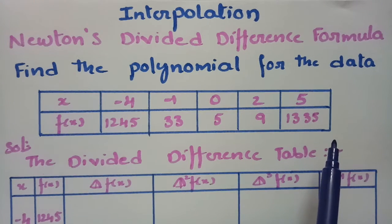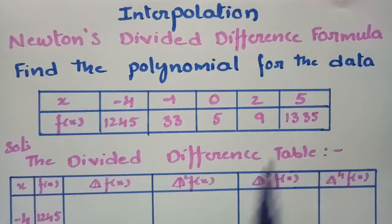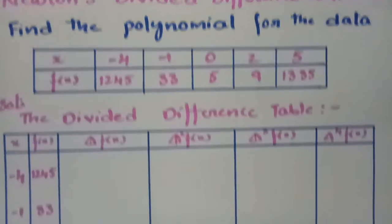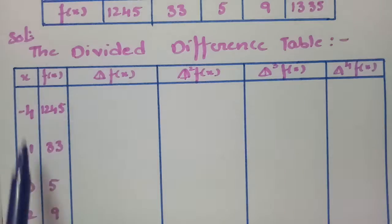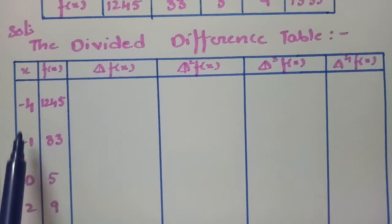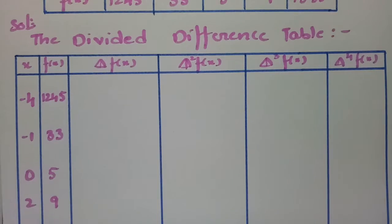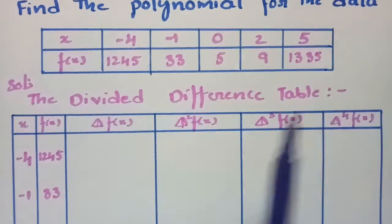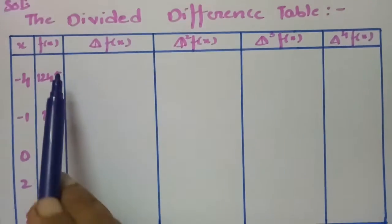In order to use Newton's divided difference formula, we have to frame the divided difference table. The table I have plotted here — these are all the x values: minus 4, minus 1, 0, 2, 5, and these are all the f(x) values.